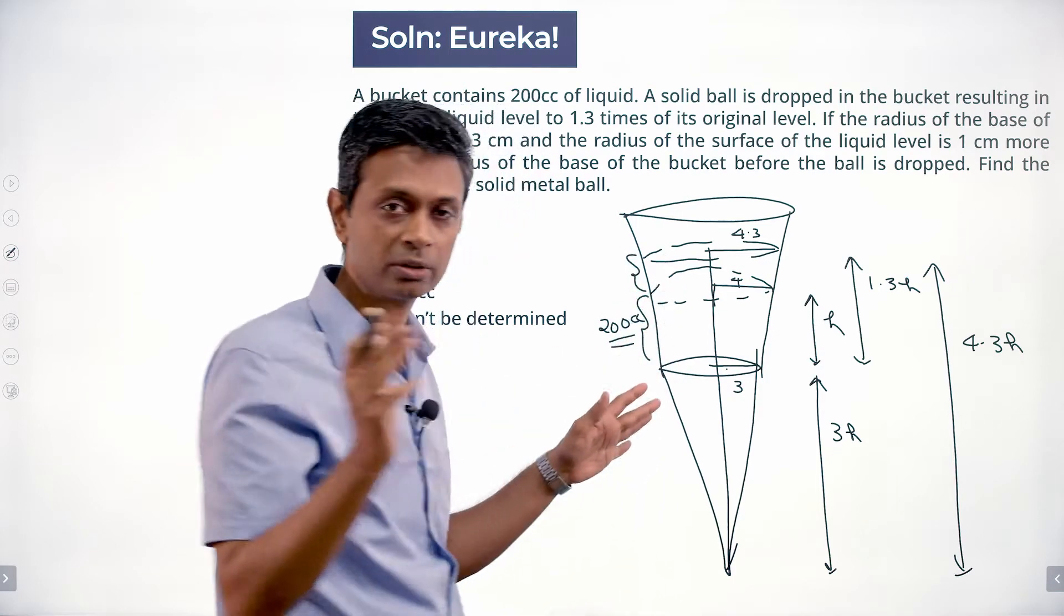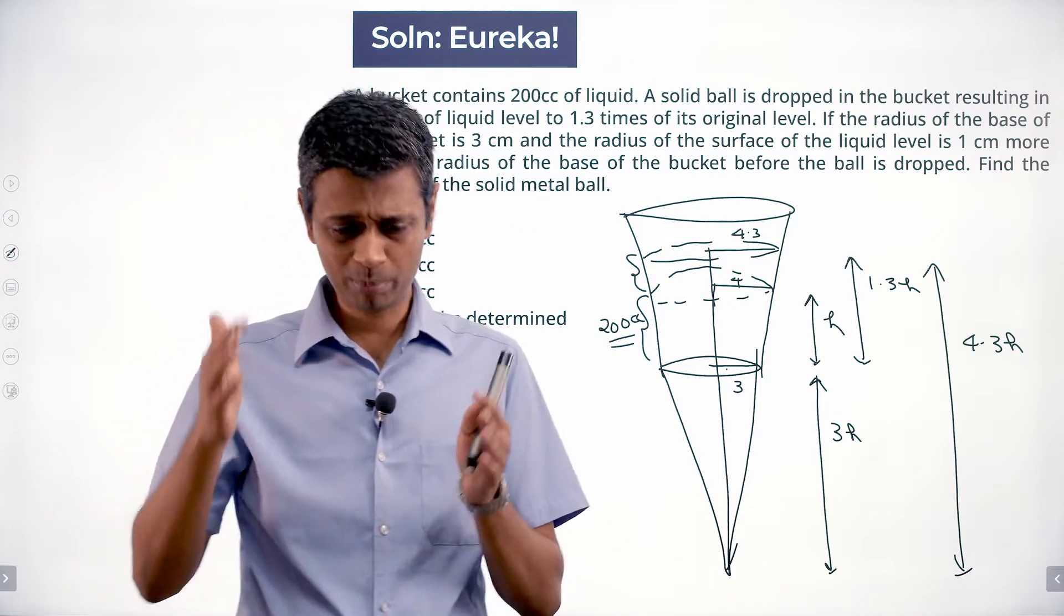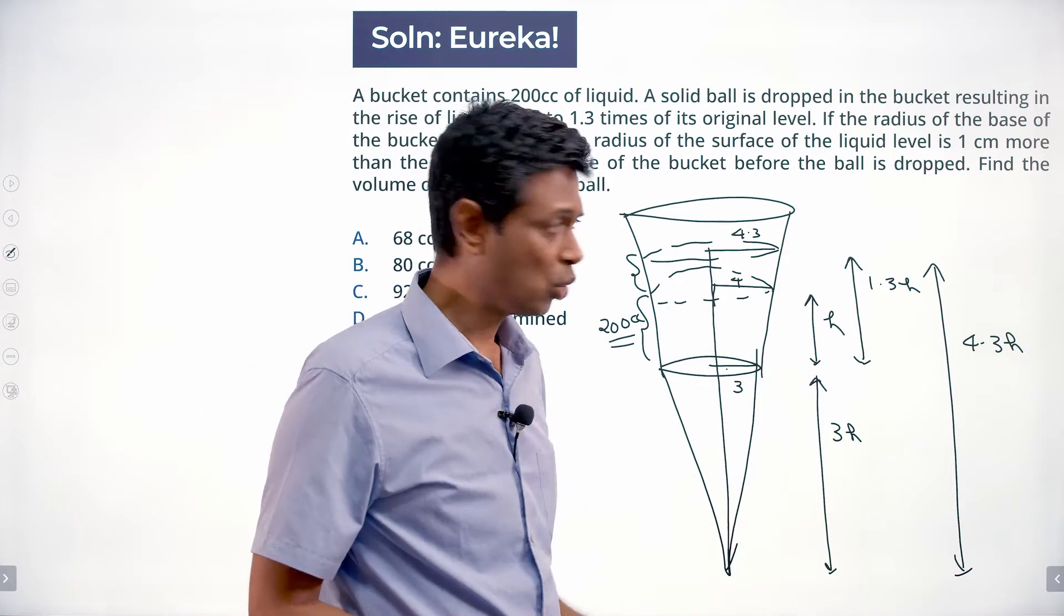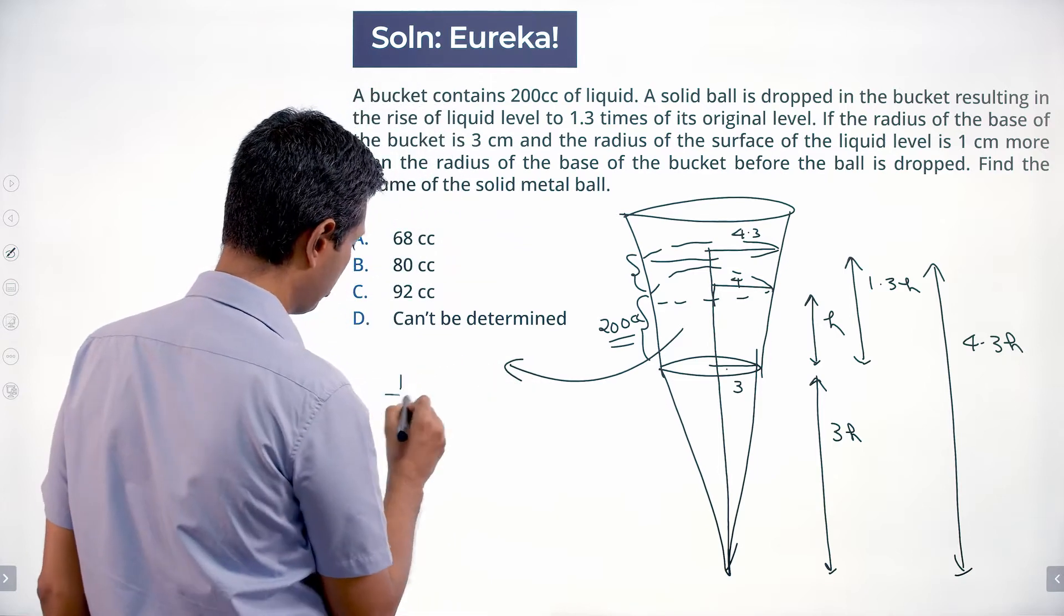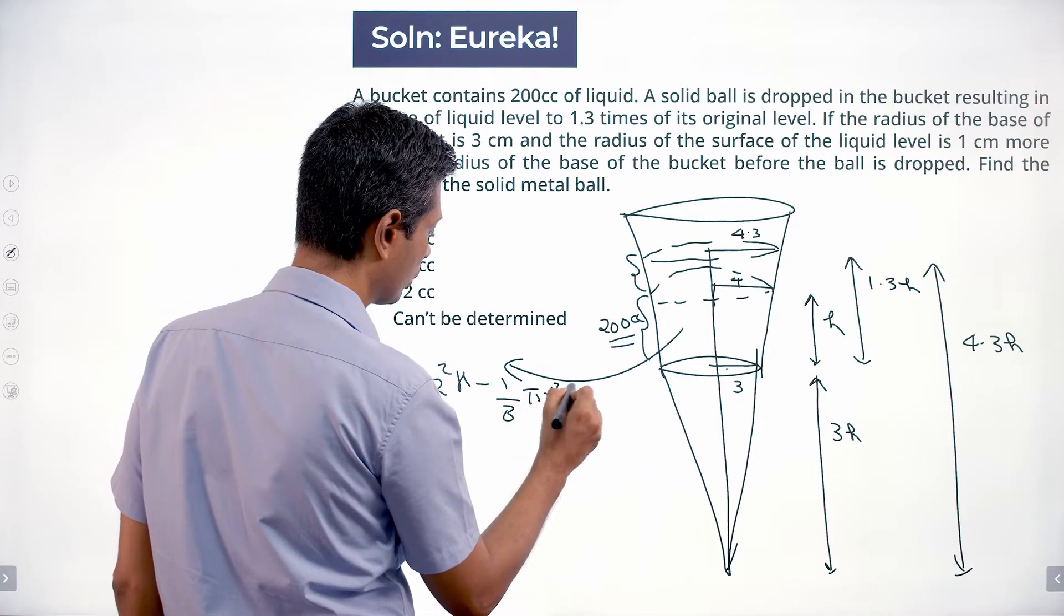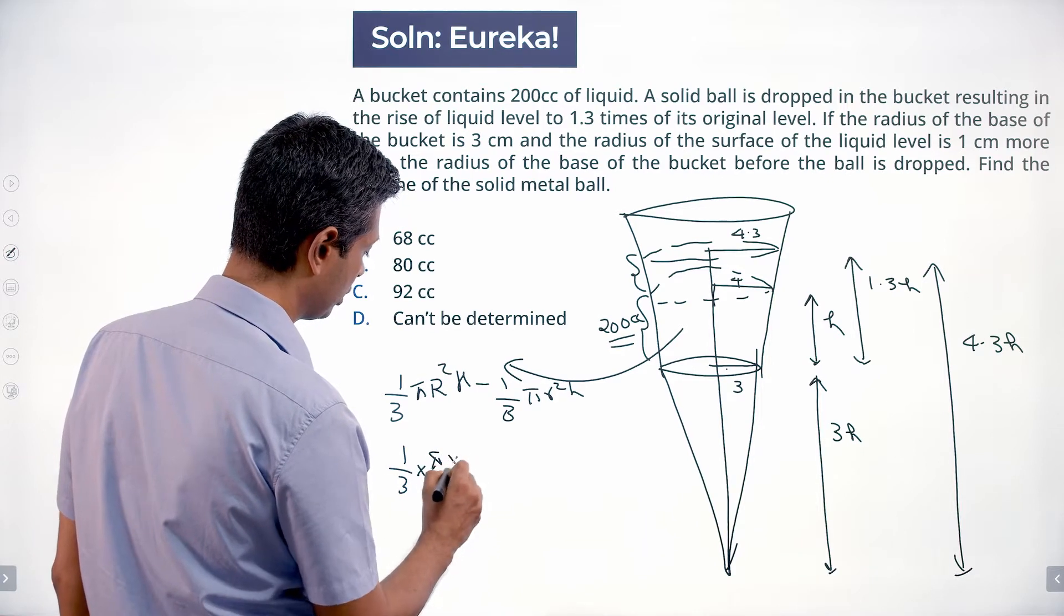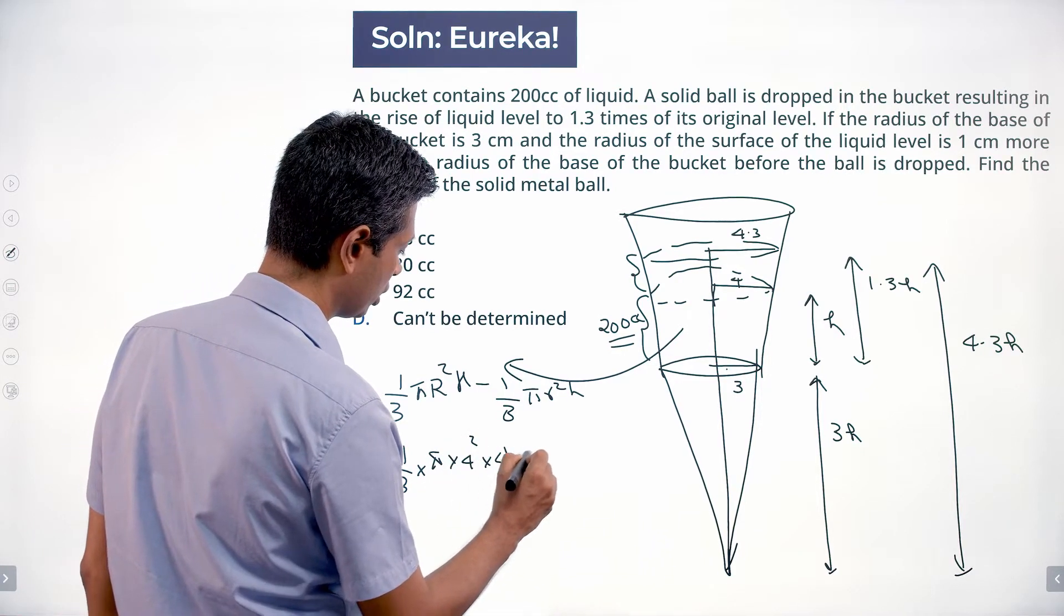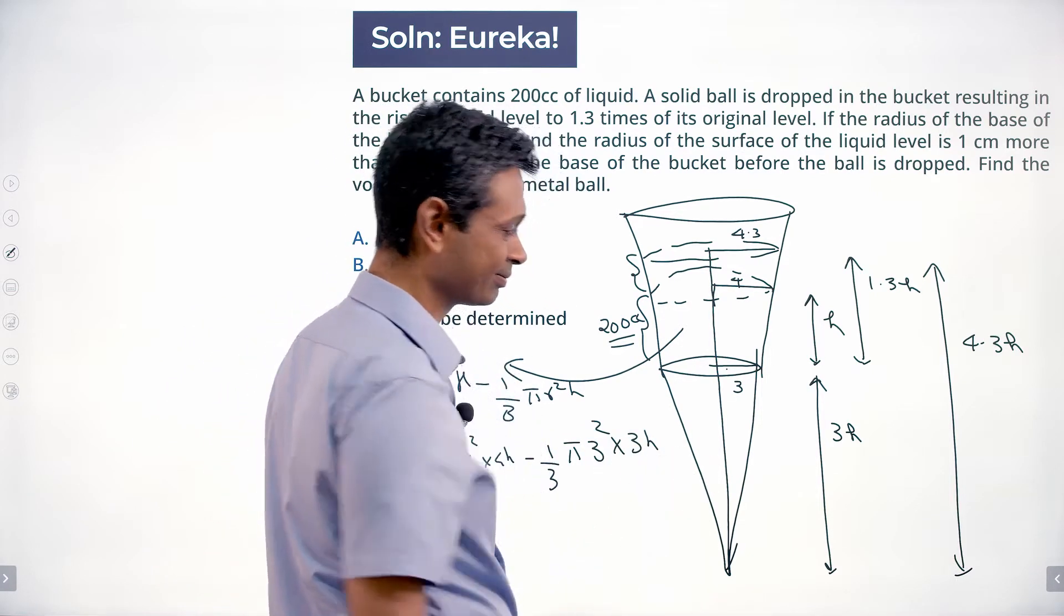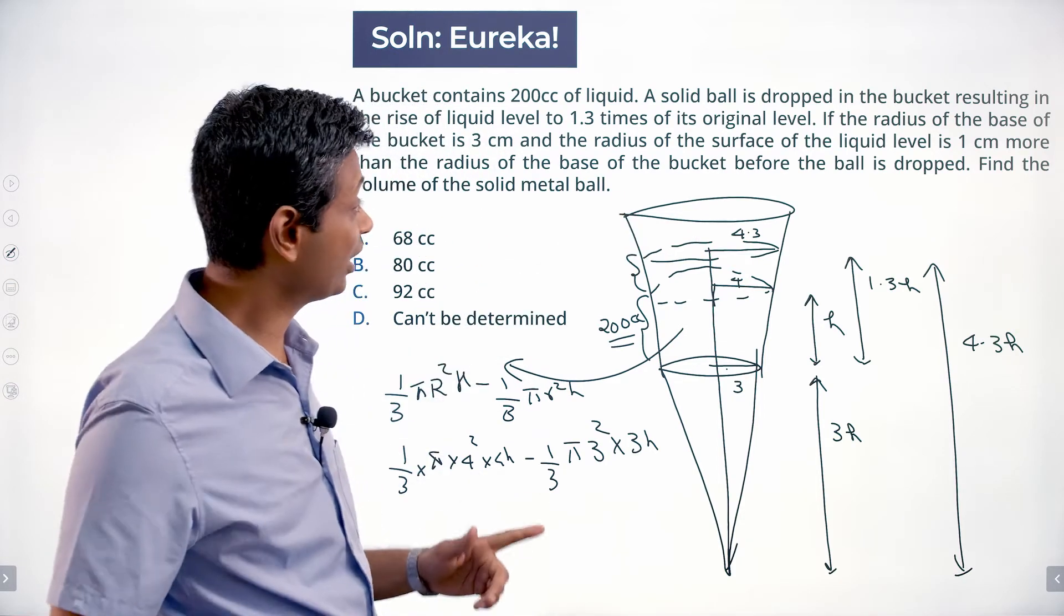How do you find volume of a frustum? Basically a bucket is a big cone cut off a small cone. Height let's say is 3h, and what is the volume of this thing? It will be 1/3 π r² h minus 1/3 π r² h. This is 1/3 π × 4² × 4h minus 1/3 π × 3² × 3h. Quite simple.